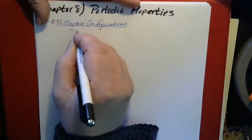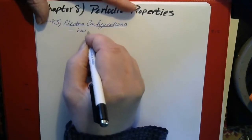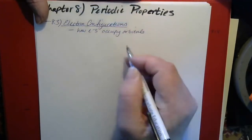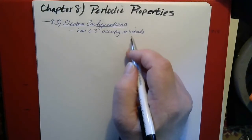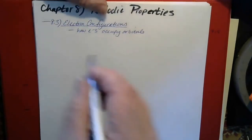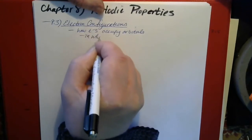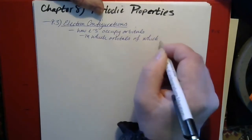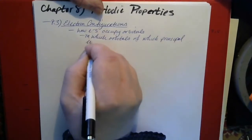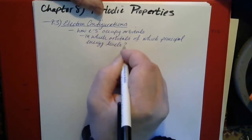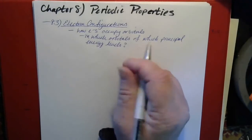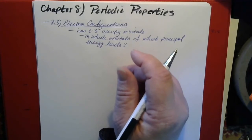What we mean by electron configurations is how the electrons occupy orbitals — how many electrons does the element have, and where are those electrons? Which orbitals in which principal energy levels? And are there any vacancies? Are there any orbitals within principal energy levels that don't have electrons in them? That can actually be important too.